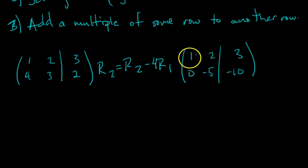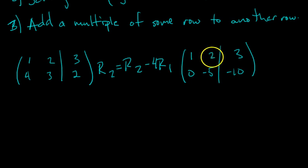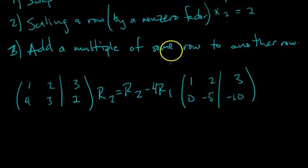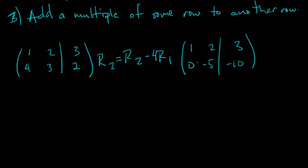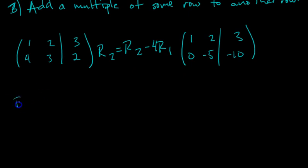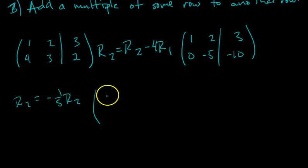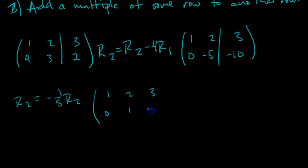Now we want to make the leading entry in row two a 1. We scale row two by −1/5: row two = −(1/5)·row two. This gives us the matrix [1, 2, 3 | 3] on row one and [0, 1, 2] on row two. That looks a lot better.